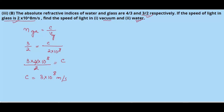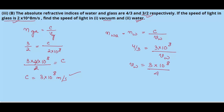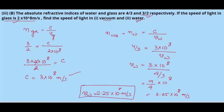Using this, we find the velocity of light in water. The absolute refractive index of water Nw = C / Vw. Given Nw = 4/3 and C = 3 × 10⁸ m/s: Vw = 3 × 10⁸ / (4/3) = 9/4 × 10⁸ = 2.25 × 10⁸ m/s. The velocity of light in water is 2.25 × 10⁸ m/s. This is the solution to this question.